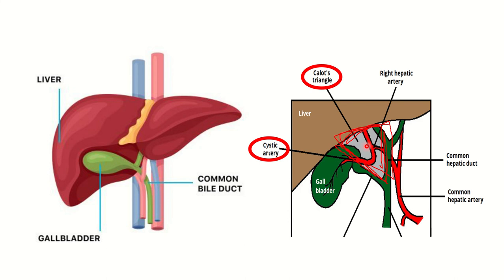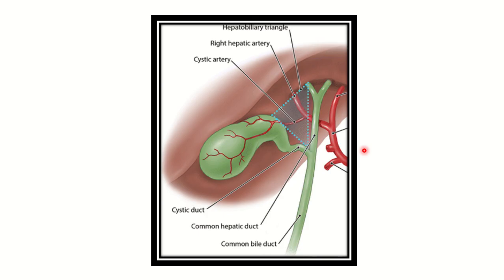So that is the normal boundary and content of the Calot's triangle. In this picture again, we can see the liver and gallbladder, the cystic artery located within the Calot's triangle, as well as other structures such as the common bile duct and the common hepatic duct.